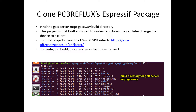The next thing that needs to be done is to clone PCB Reflux's Espressif package, since a good portion of the gateway code is based on his example. After installation, navigate to the GATT server MQTT gateway build directory. Build this project first, and then use it to understand how it can be changed so that the device is a client rather than a server. Building is just a matter of using make to configure, build, flash, and monitor the device.